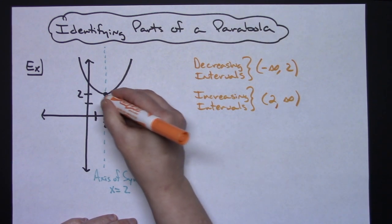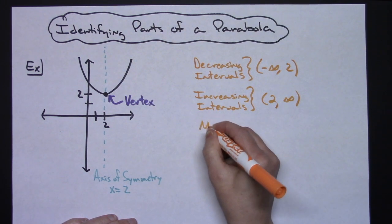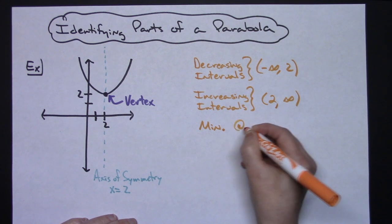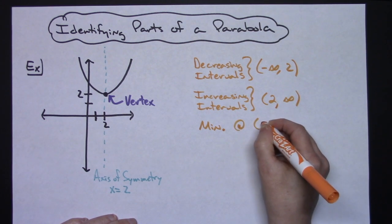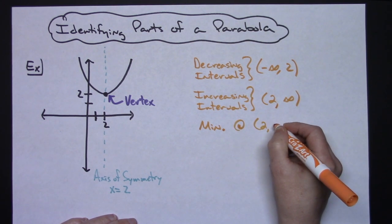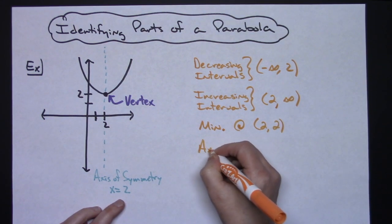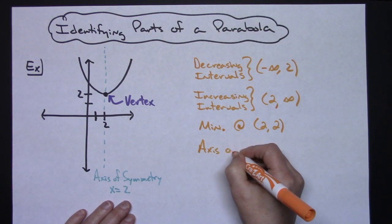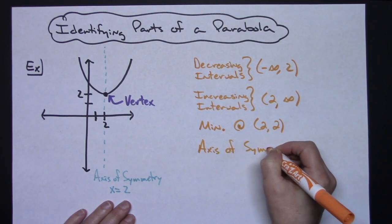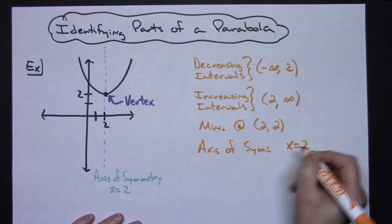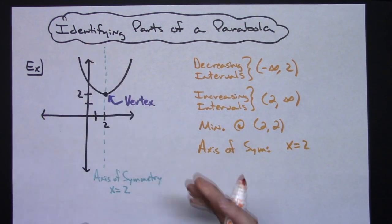This vertex is a minimum, so we have a minimum at the ordered pair (2,2). And we have our axis of symmetry, which we labeled over here—axis of symmetry—and that's going to be written in the form of an equation, x equals 2, because it's the equation of that imaginary vertical line that cuts the parabola in half.